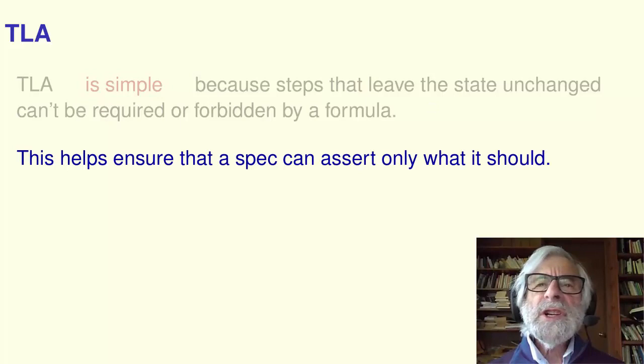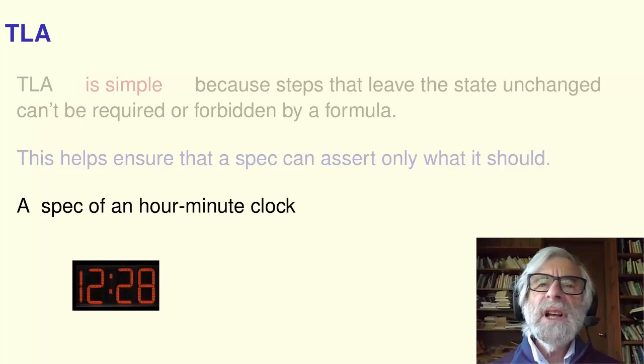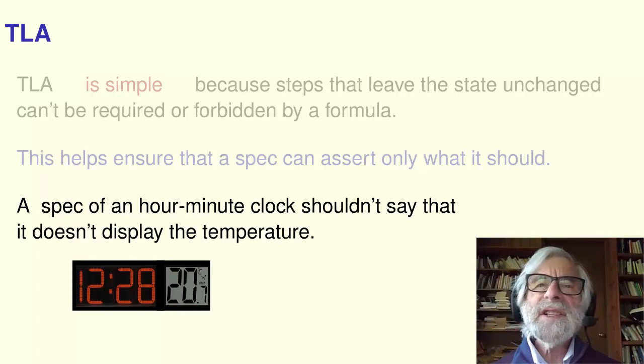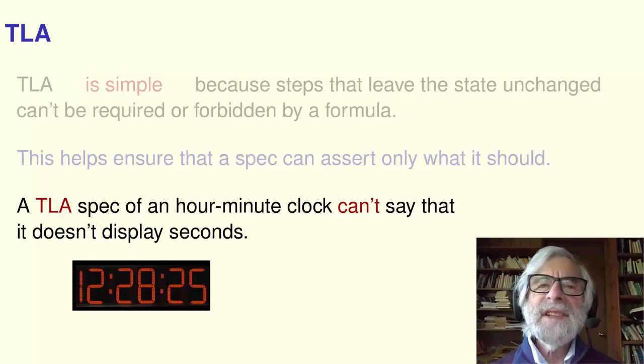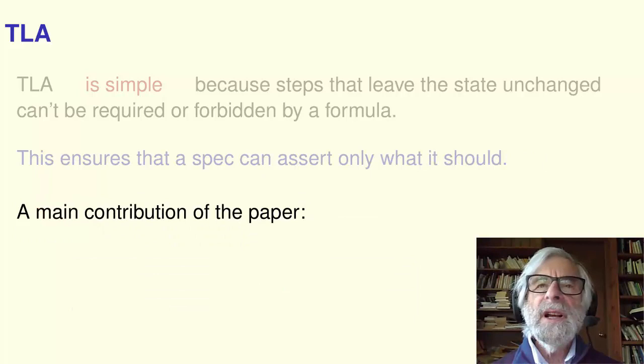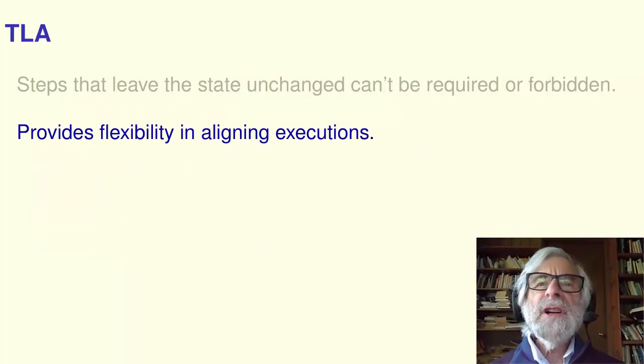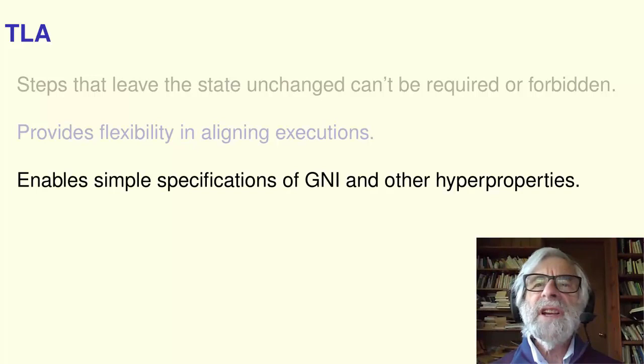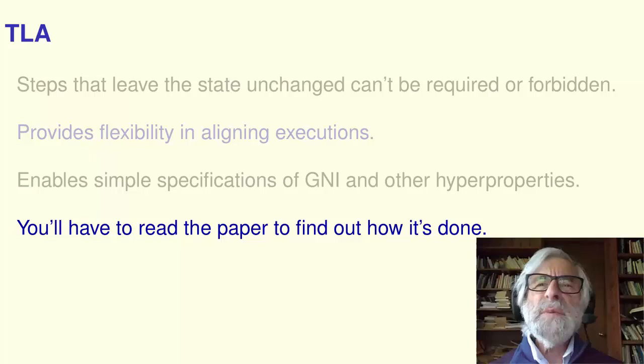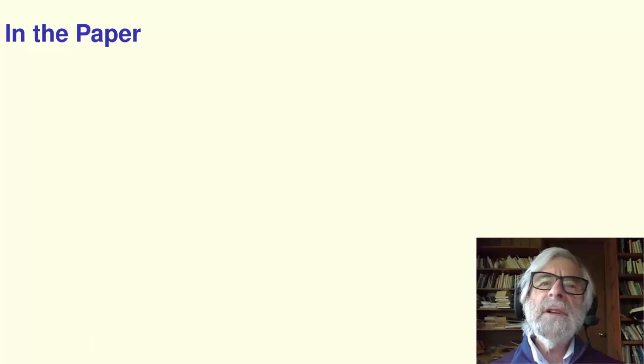This restriction helps ensure that a spec can assert only what it should. For example, a specification of an hour-minute clock should not assert that the clock does not display the temperature or doesn't display seconds. A TLA spec can't say that. That's why implementation is simply implication. A main contribution of the paper is that this feature of TLA is also important for expressing hyperproperties. This feature provides flexibility in aligning executions. It enables simple specifications of a class of hyperproperties that includes GNI. You'll have to read the paper to find out how it's done. It's not obvious.